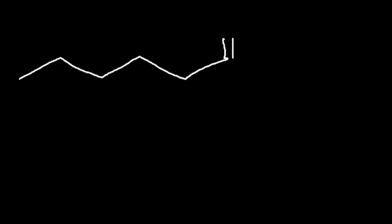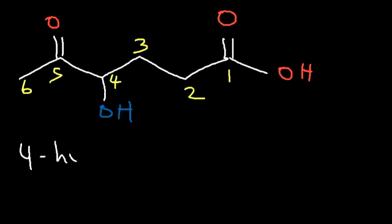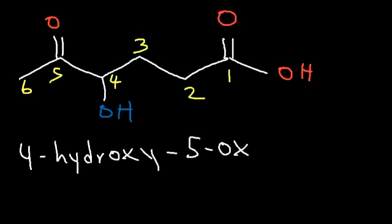Now how about this one? The carboxylic acid has more priority than the ketone and the alcohol. H comes before O alphabetically, so this is going to be 4-hydroxy, then 5-oxo, and since we have a 6-carbon chain, hexanoic acid.